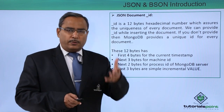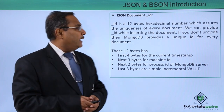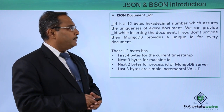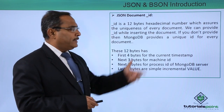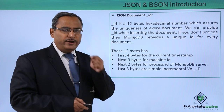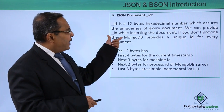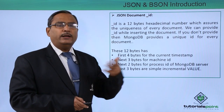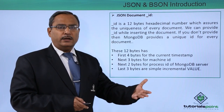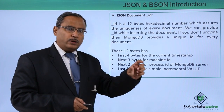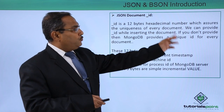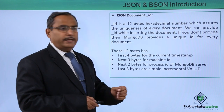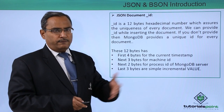Now let us discuss more about this JSON document ID. The underscore ID is a 12-byte hexadecimal number which ensures the uniqueness of each and every document. We can provide the underscore ID while inserting the document. If we do not provide one, then MongoDB provides a unique ID for each and every document from the system.